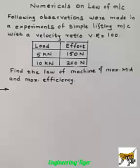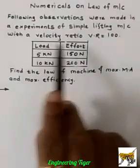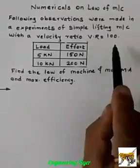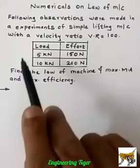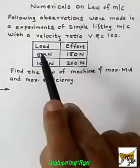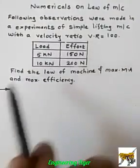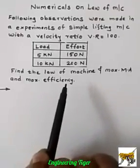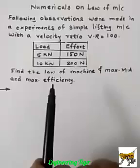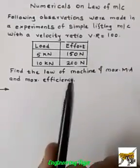Today we will take a numerical problem on law of machine. Here we have taken one example. Following observations were made in an experiment of a simple lifting machine with a velocity ratio VR equal to 100. The efforts required with the corresponding loads are given, with two loads and two efforts. Find the law of machine, maximum MA, and maximum efficiency. We will solve this type of example using the law of machine.